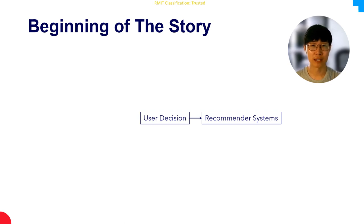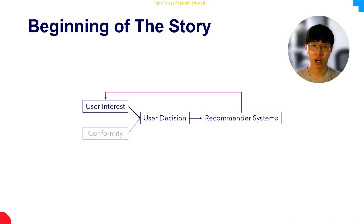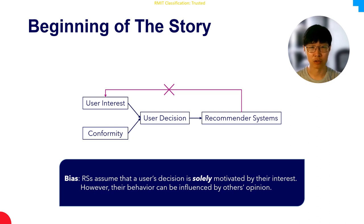Recommendations provide personalized recommendations to users by learning users' interests from their behavior. The basic assumption behind this is that users' decisions are always driven by their interest. However, this assumption does not always hold because users can be influenced by others' opinions and then adjust their behavior to match those of other people. We call it conformity behavior. This behavior does not always reflect users' real interests, and it will introduce a bias against the underlying assumption.